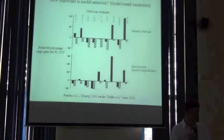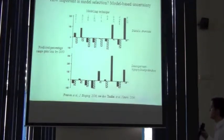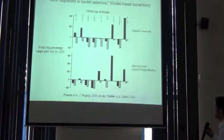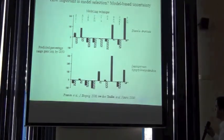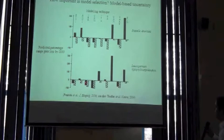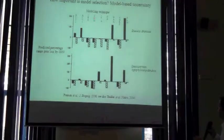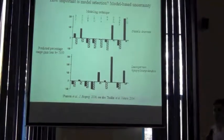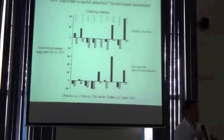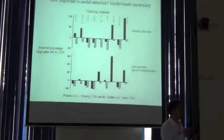300% expansion in its range area under a future climate scenario. Whereas using the same dispersal assumptions, we had other models, for example GARP, that predicted an almost complete contraction of that species range.